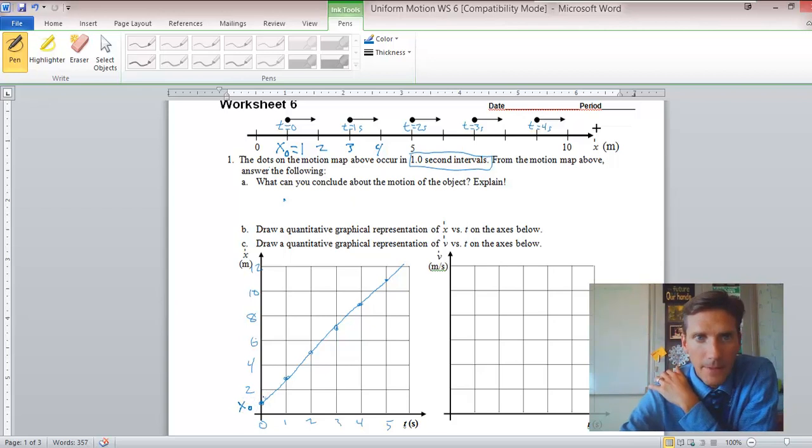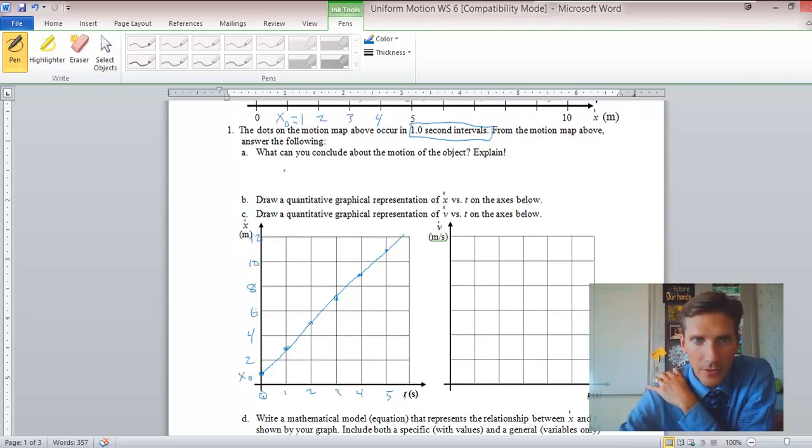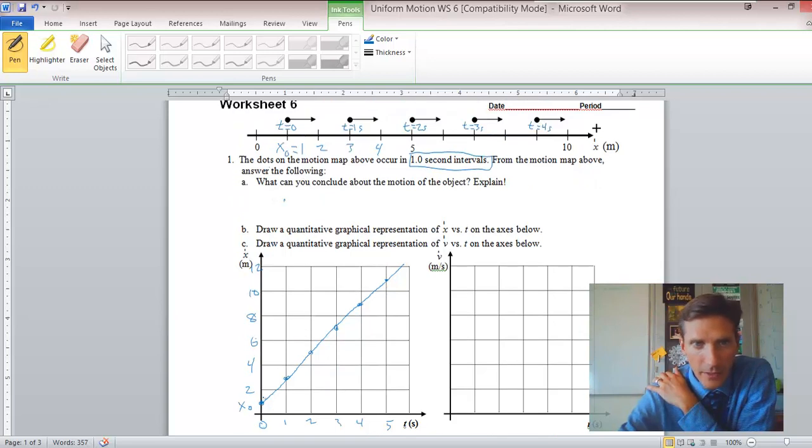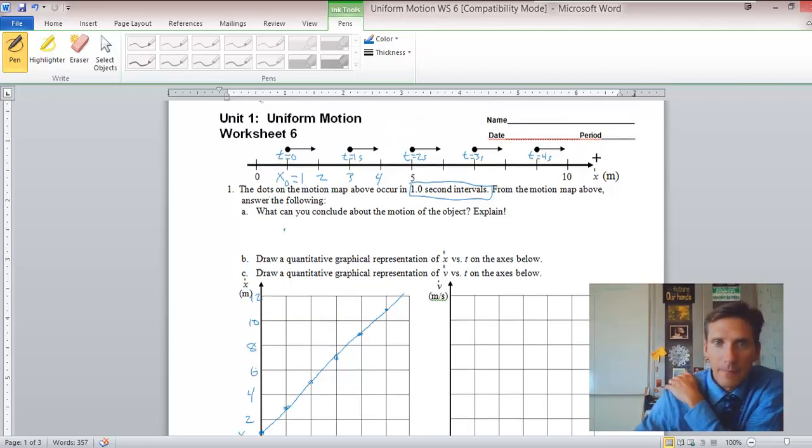So there's a quantitative graphical representation of position versus time. If we want to do the same for velocity versus time, we have to ask ourselves what is the velocity. And this is why I would ask you to look at how far is it going for every one-second interval. And it's pretty clear to see that it's going from one to three, and then from three to five, five to seven, et cetera.